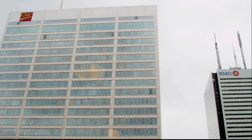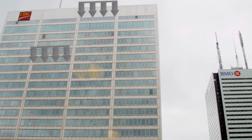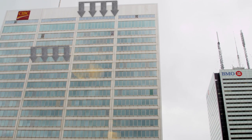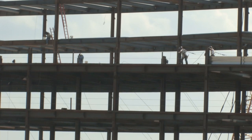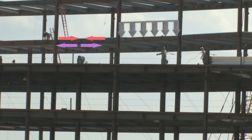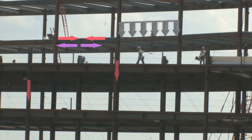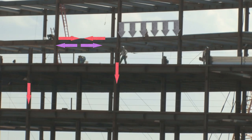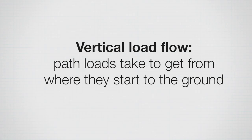As we analyze and design for vertical loads, it's a lot like what we did with beams and columns. We figure out a load path: those vertical loads are either on the roof or at floor levels where people are generating loads, and they get applied directly to the beams. The beams carry the loads out to the columns, and the columns carry them down to the ground — that's called vertical load flow.